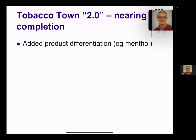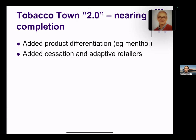We are now about to publish results from what we're calling Tobacco Town 2.0, which is a big upgrade in a variety of ways. First, we've added a lot of product differentiation — menthol cigarettes, different forms in which tobacco is sold. We've added not just endpoints about price and convenience, but actual projected cessation rates and reduction in smoking due to these policies. We've also made our retailers adaptive, so if you close some of them, the others won't keep behaving the same way as before the closure of their competitors.